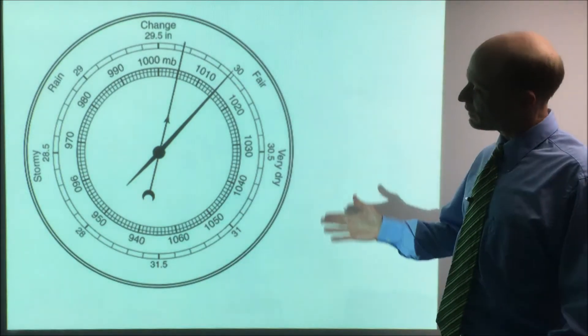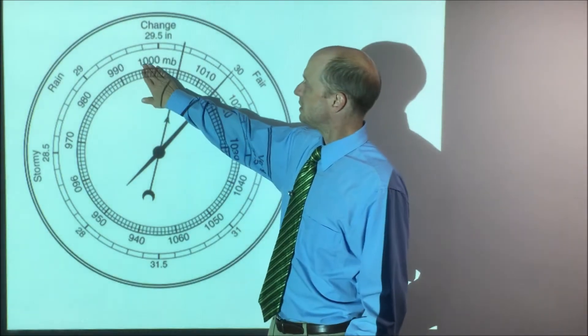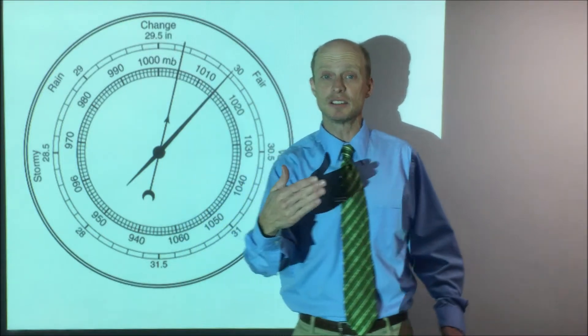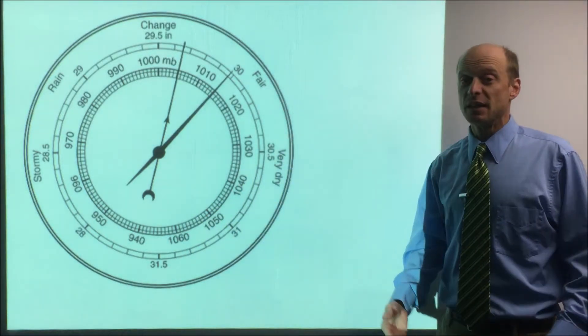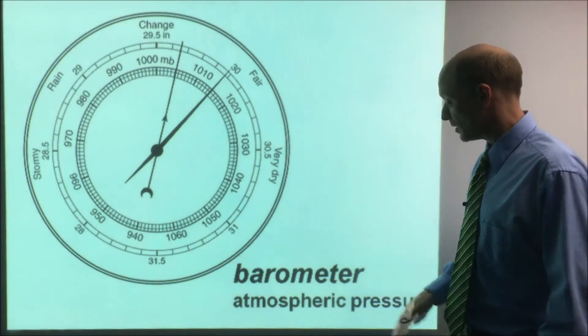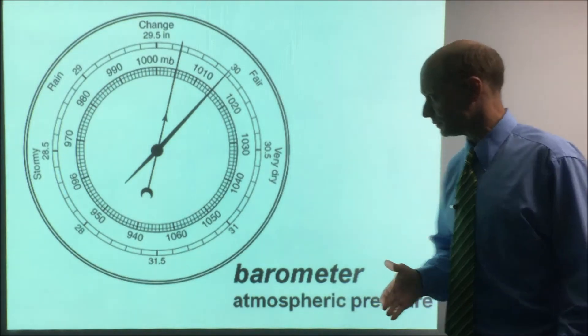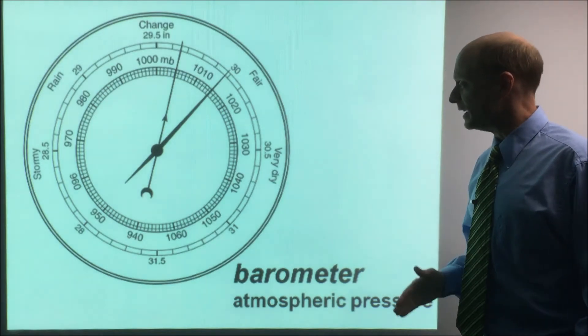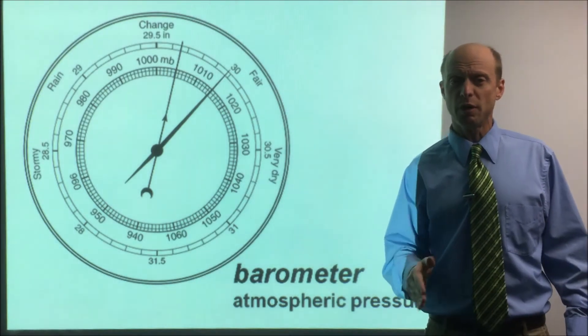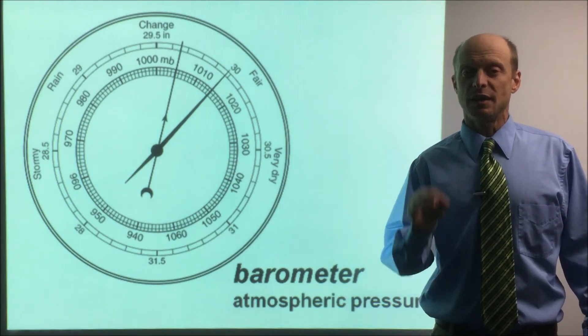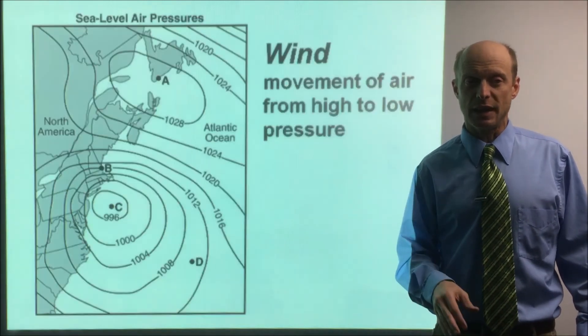This right here, you have to look kind of closely, recognize the units. These are MB. Hopefully you recognize that's millibars. This is inches, meaning inches of mercury. This is a barometer and it measures atmospheric pressure, also called barometric pressure. That is a very important feature and variable in weather. It drives so much weather is barometric pressure. Let's look at that now.